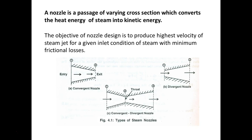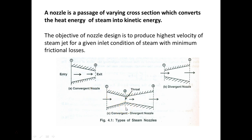There are different types of nozzles: convergent nozzle, divergent nozzle, and convergent-divergent nozzle. It is only the shape of the nozzle. In a convergent nozzle, the area is gradually decreasing. In a divergent nozzle, the area is gradually increasing. In a convergent-divergent nozzle, the area is initially decreasing, reaches a minimum area at the throat section, and then increases.